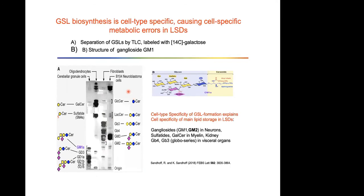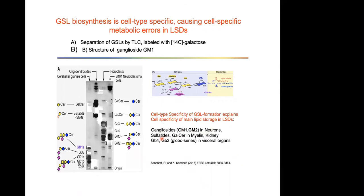In neuroblastoma cells, the complex ganglioside fraction is very little, but the precursor ganglioside GM3 is heavily labeled. So there is a cell-type specificity of glycosphingolipid formation, and this explains the cell specificity of myelin lipid storage in glycosphingolipidosis. If we have a block in ganglioside catabolism — like in GM1 and GM2 gangliosidosis — the main storage is in neurons and specifically in the lysosomes. If there is a block in sulfatide or galactosylceramide degradation, storage is found in myelin and kidney. If globoside degradation is inhibited, we see it in visceral organs. So we have a cell and organ type specificity.